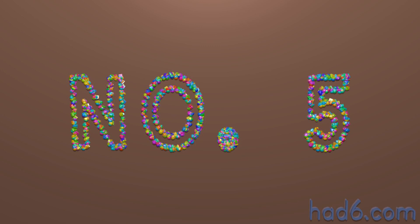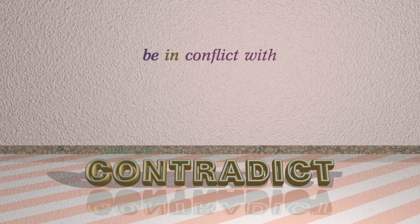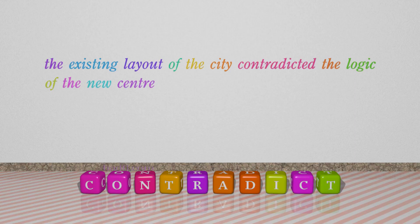Number 5: Contradict. Which means: be in conflict with. For example: The existing layout of the city contradicted the logic of the new center.